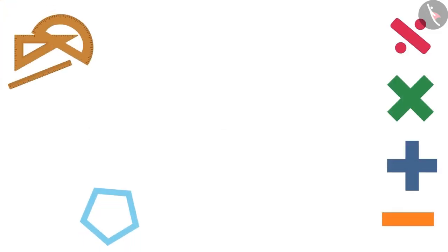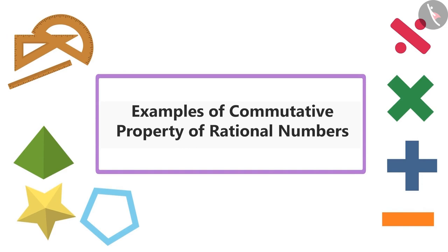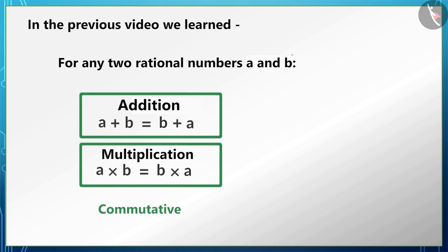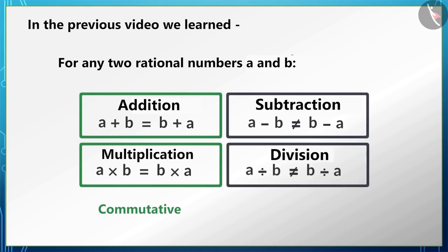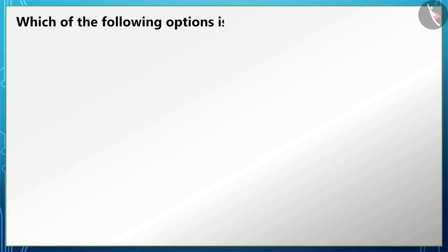Friends, welcome to this video. Today we will see some examples based on the commutative property of rational numbers. In the previous video we learned that the sum and the multiplication of rational numbers are commutative, but the subtraction and division are not commutative. Come, let's see what is happening in this class. Children, look carefully and tell which of these options is correct.